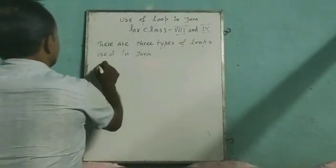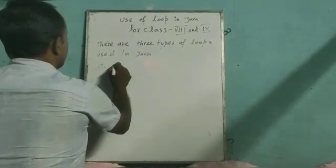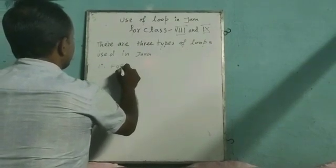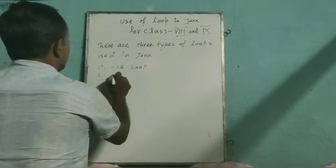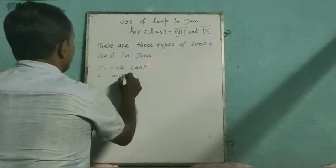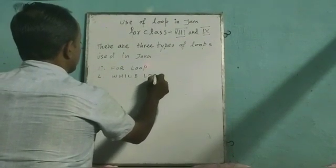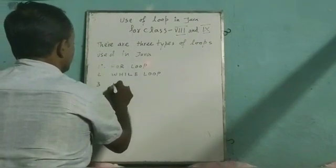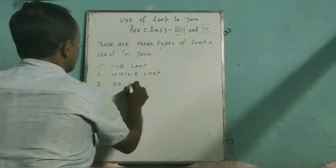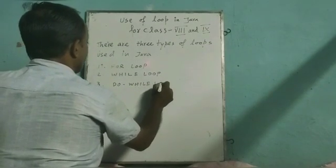Those are: number one, for loop; number two, while loop; and number three, do-while loop.